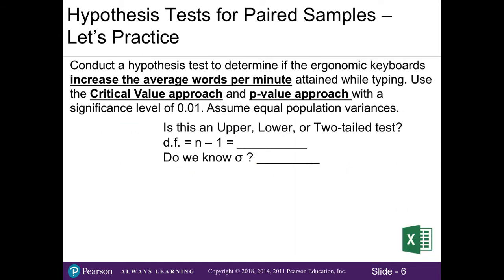The problem asks us to conduct a hypothesis test to determine if ergonomic keyboards increase the average words per minute attained while typing, using both the critical value approach and the p-value approach with a significance level of 0.01. For our null and alternative hypotheses, because we're interested in whether ergonomic keyboards increase words per minute, the context clue is 'increase,' so our alternative hypothesis states greater than zero.